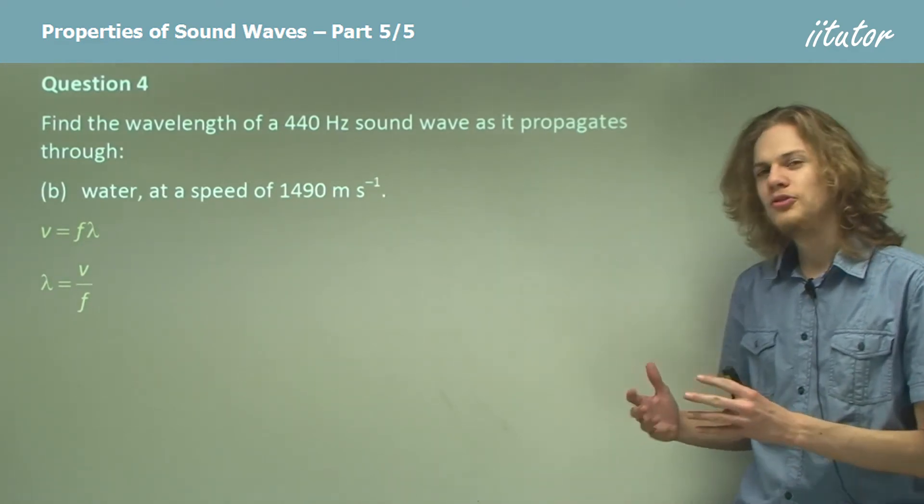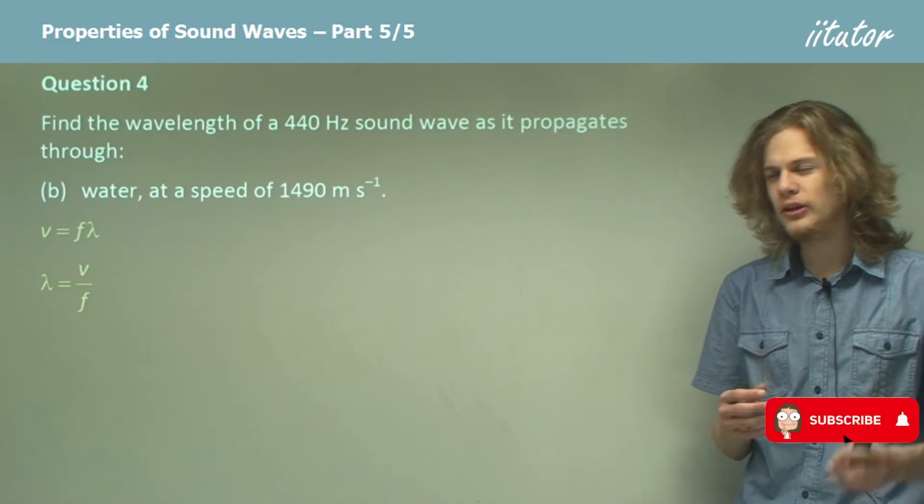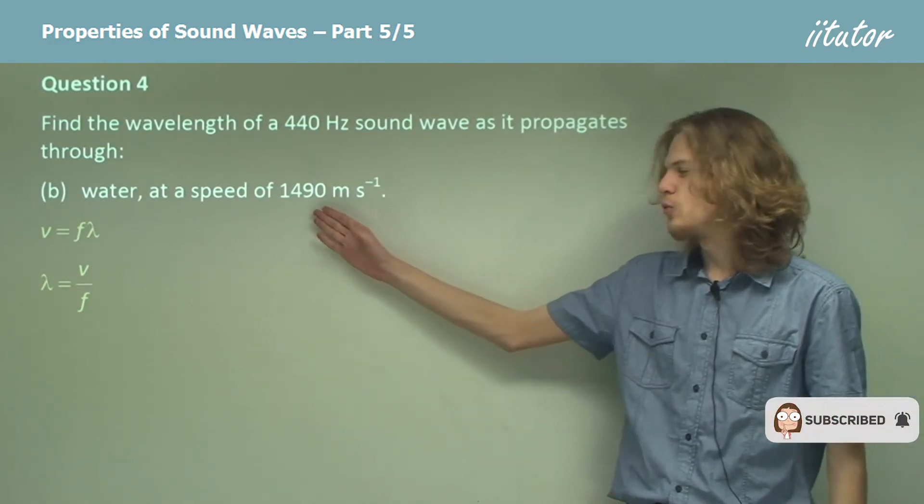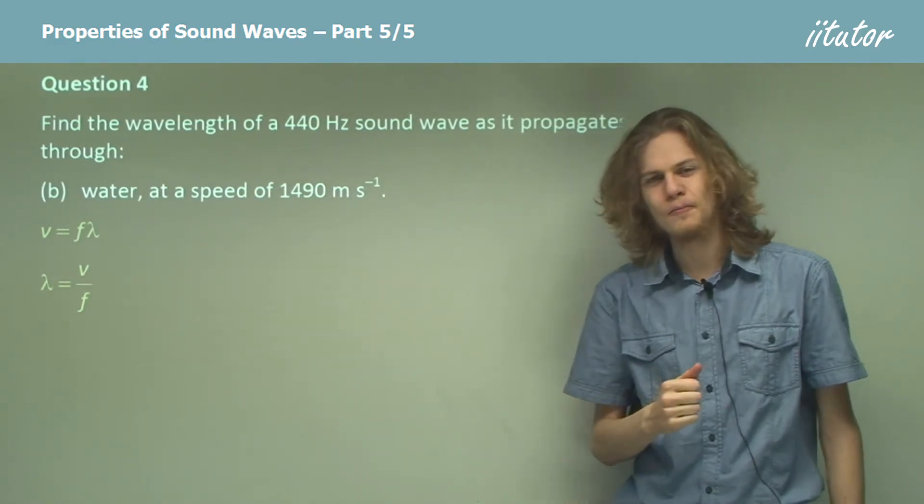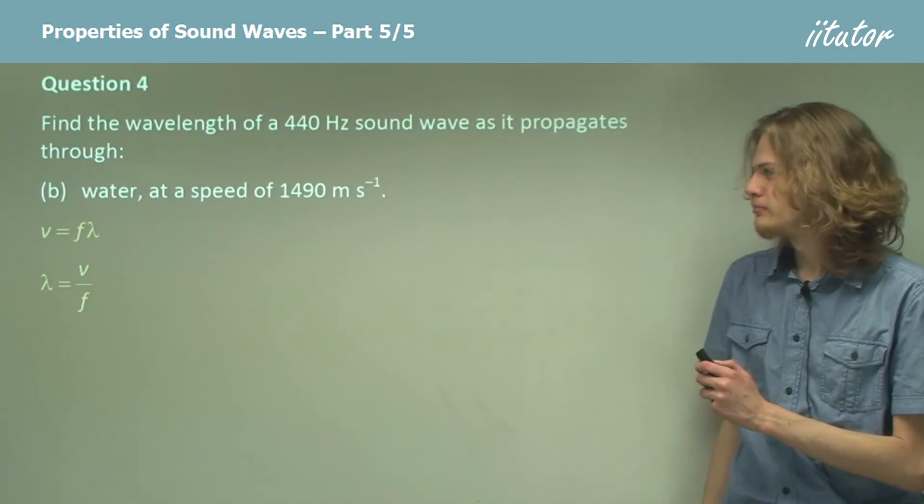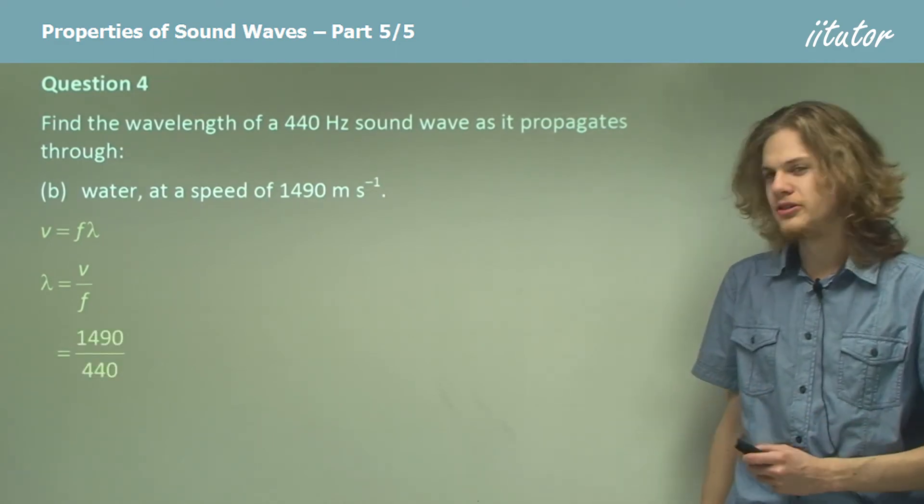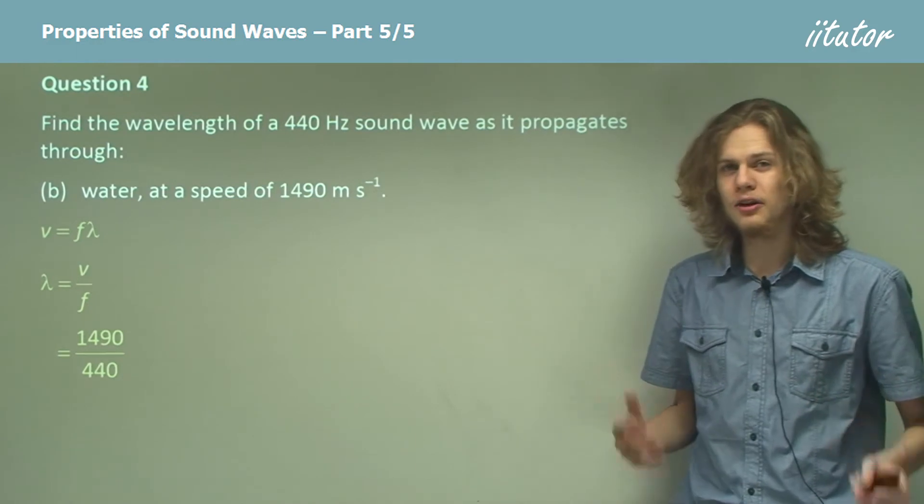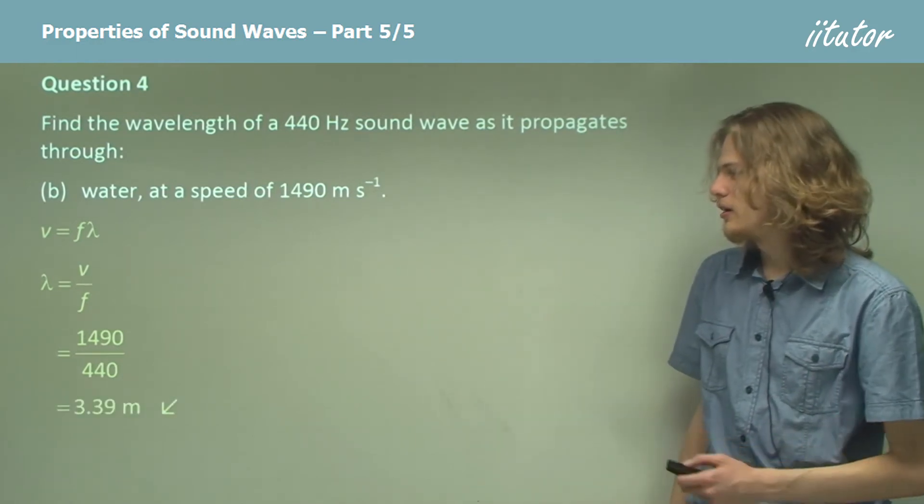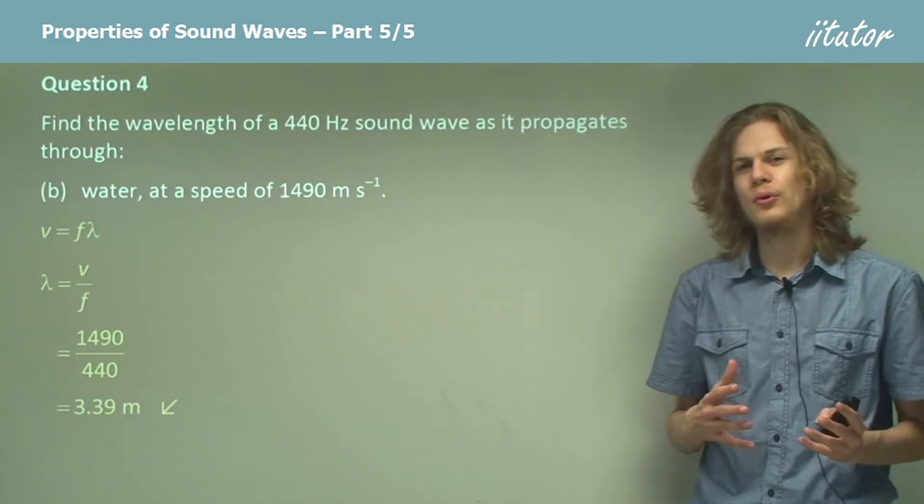This time though, instead of substituting in 340, we'll be substituting in 1490 meters per second. So that'll give us this answer, which we can evaluate with a calculator to find that our wavelength will be 3.39 meters.